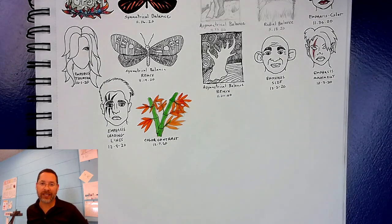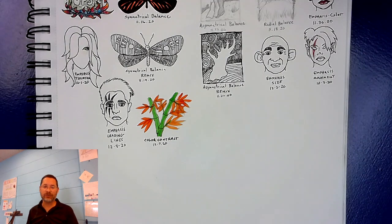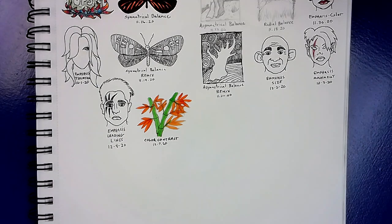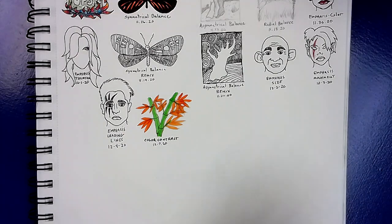Welcome back artists. We're on day two of the principle of design contrast. We're doing warm-ups and today we are going to use shape to show contrast. So if you think about the two different types of shape, there's basically two different kinds: there's organic shapes and there are geometric shapes.